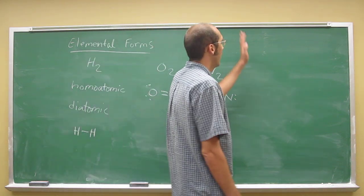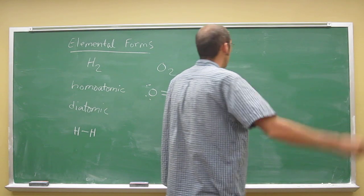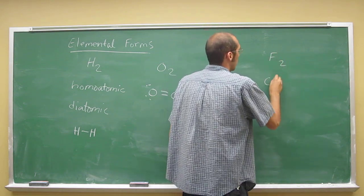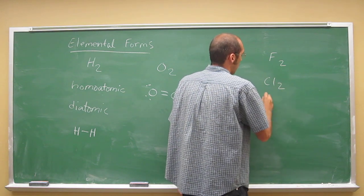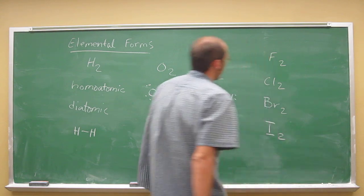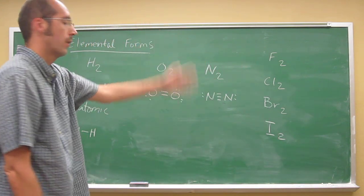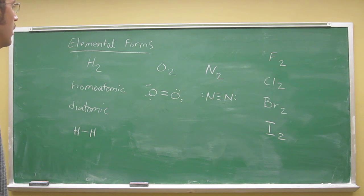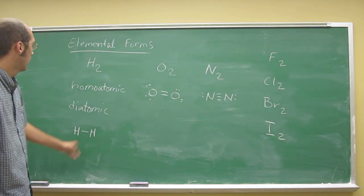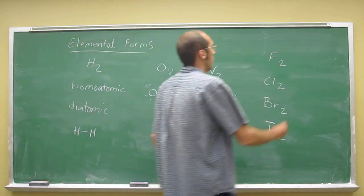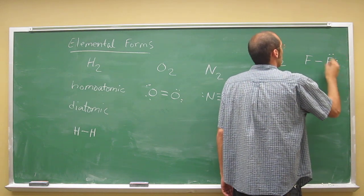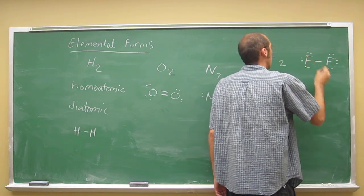And then all the halogens, which are the ones in group seven - so fluorine, chlorine, bromine, and iodine. We just usually go with the four common halogens. And they all look very similar to hydrogen, except they've got three lone pairs around them, around each of the atomic symbols. So fluorine looks like that.